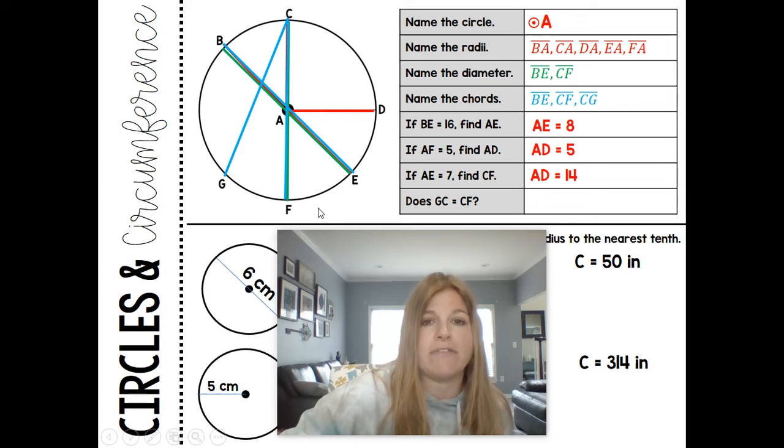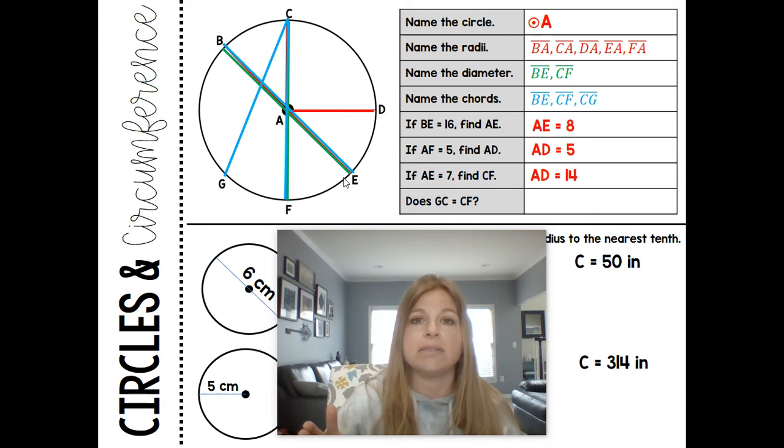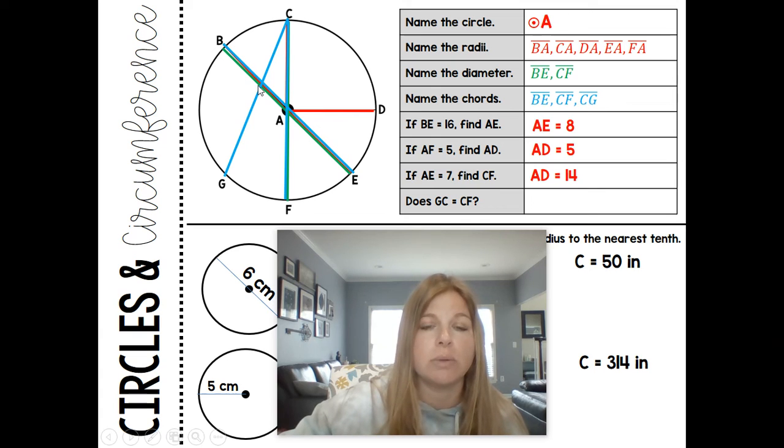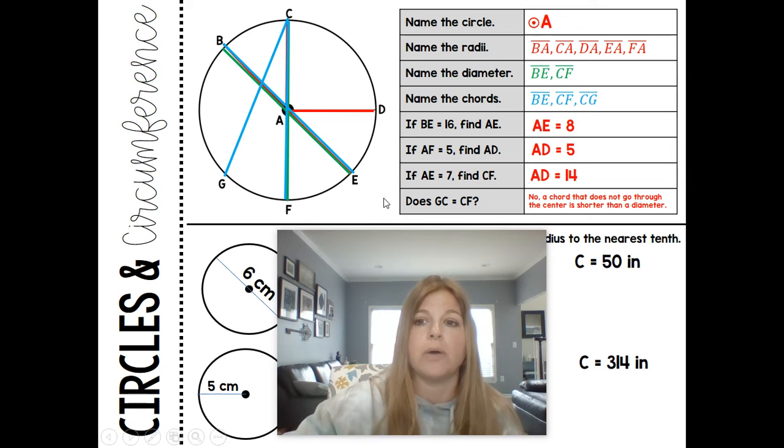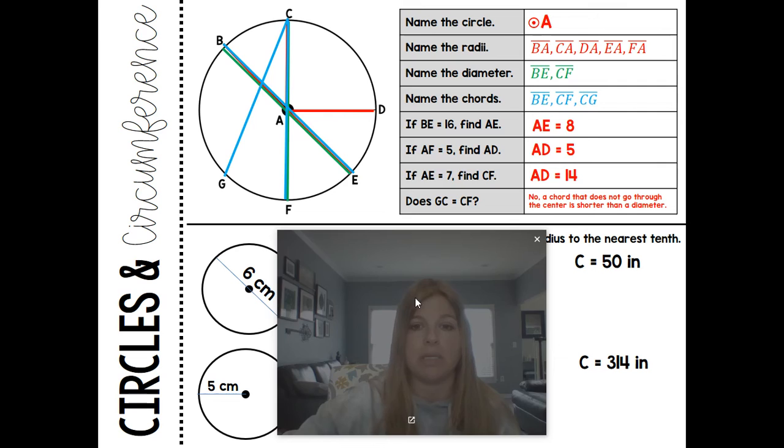Does GC equal CF? Now here's the deal. The diameter is actually the longest chord you could possibly have. Anything else connecting other two parts of a circle together would result in a smaller segment than the chord that goes through the center of the circle. So by definition, then, the diameter will always be larger than any other chord that doesn't go through the center. So does this chord, GC, equal CF? The answer would be no. A chord that does not go through the center is shorter than the diameter. And that's always going to be the case.